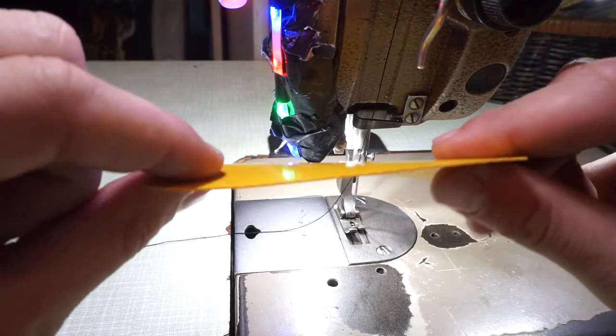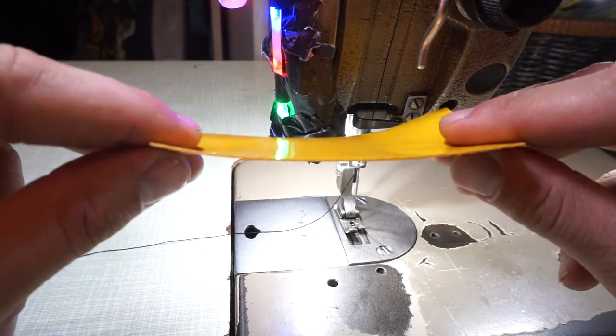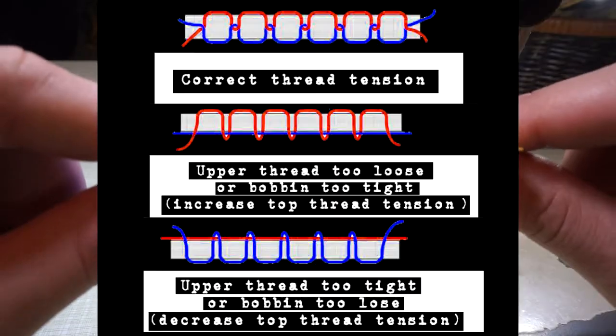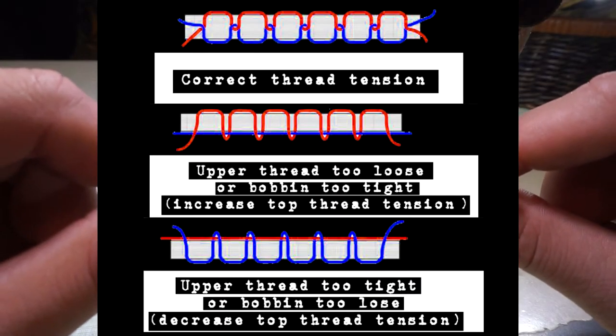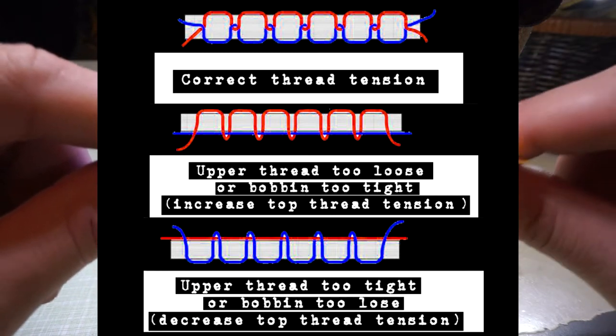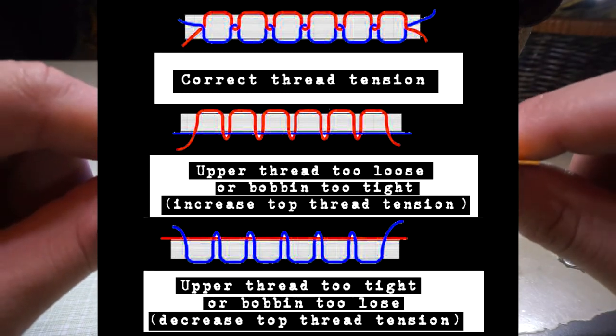If you have a canvas, the knots of the thread should be inside the canvas. So like this in this picture. This is the correct thread tension. You can see correct thread tension and incorrect thread tension.